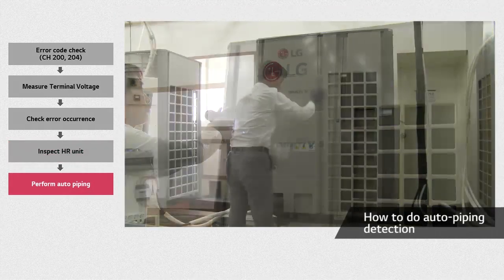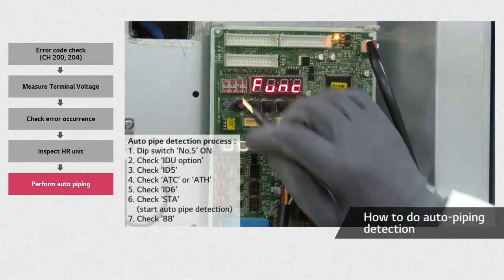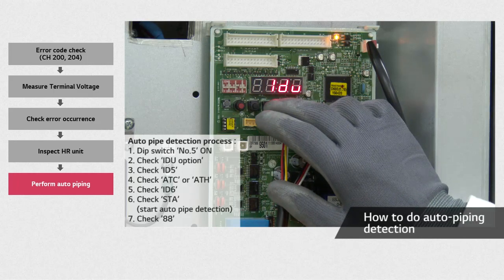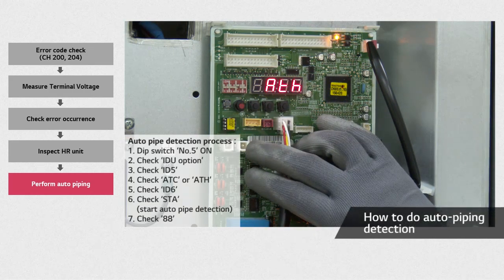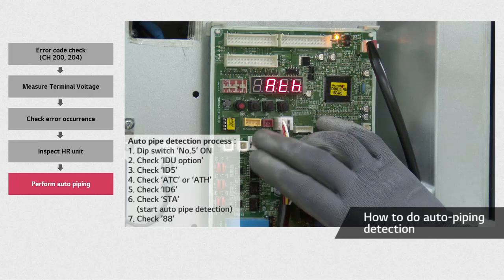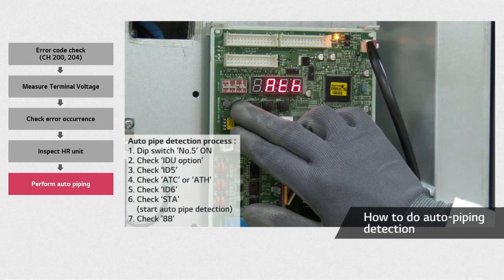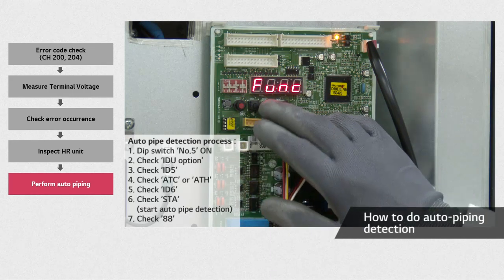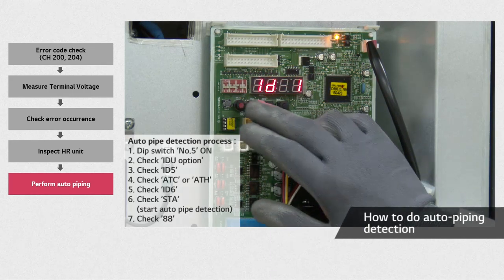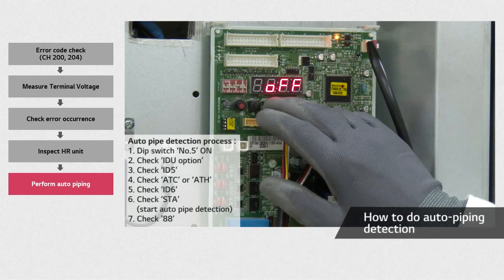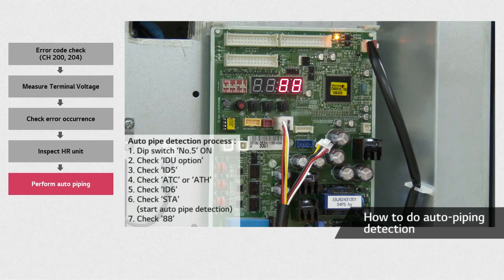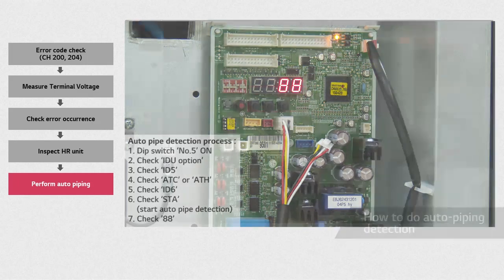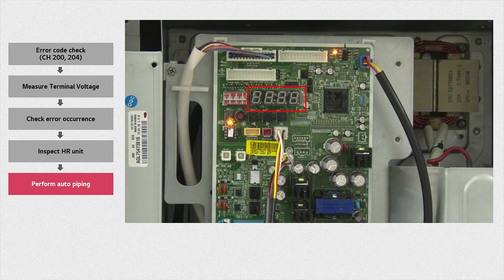Now, remove the front panel on the outdoor unit. After adjusting the HR unit DIP switch according to the IDU number, you will need to perform auto-pipe detection. To do this, turn on the DIP switch and after selecting the indoor unit number, select ID5. If the ambient temperature is below 15 degrees, ATH will show up. Finally, after setting ID6 and waiting for a while, 88 will show up on the screen and the piping detection will begin. After the DIP switch is properly set and the pipe detection appropriately done, error CH200 will disappear.